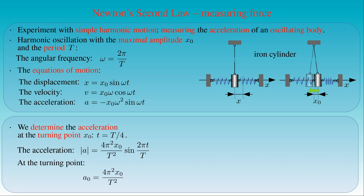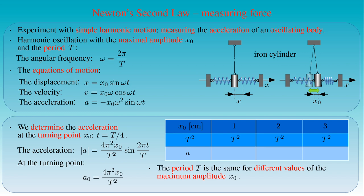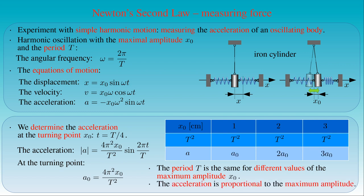To determine the acceleration at the turning point, we only need to fix the maximum amplitude x0 and measure the period T or its square. Now we perform three experiments: we choose the maximum amplitude x0 of the cylinder to be 1 cm, 2 cm, and 3 cm respectively, and measure the corresponding period of oscillation. We find that the period is the same in each case — that is, T² has the same value for each maximum amplitude. We can conclude that the acceleration is 2 times and 3 times greater in the second and third cases than in the first experiment.